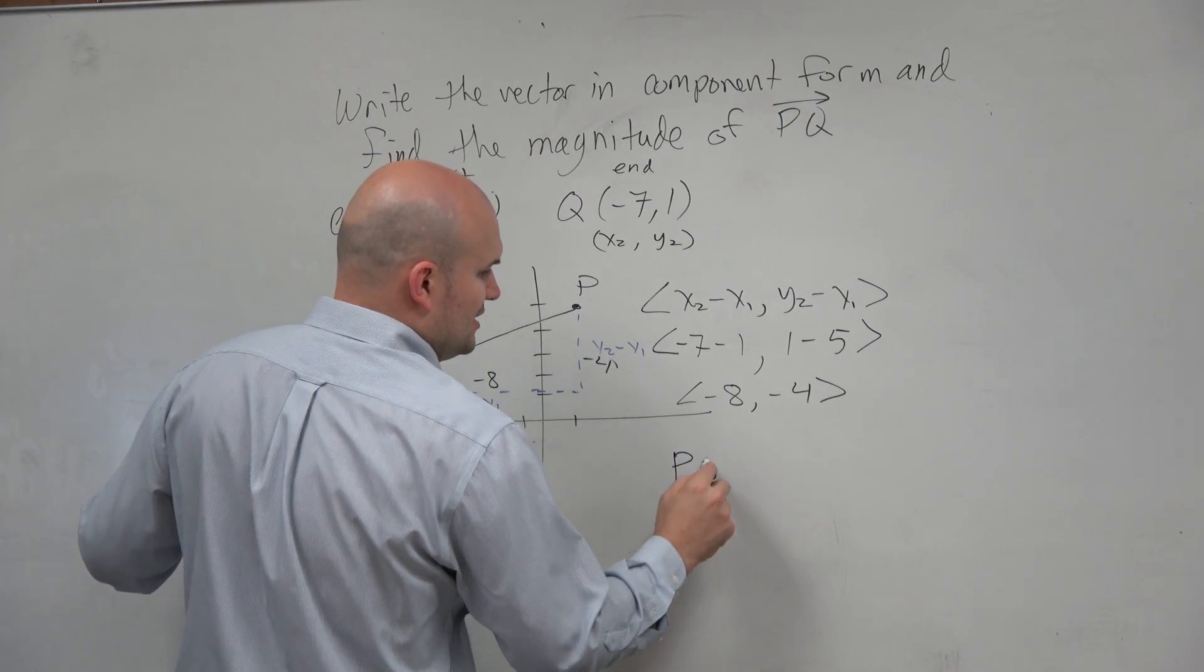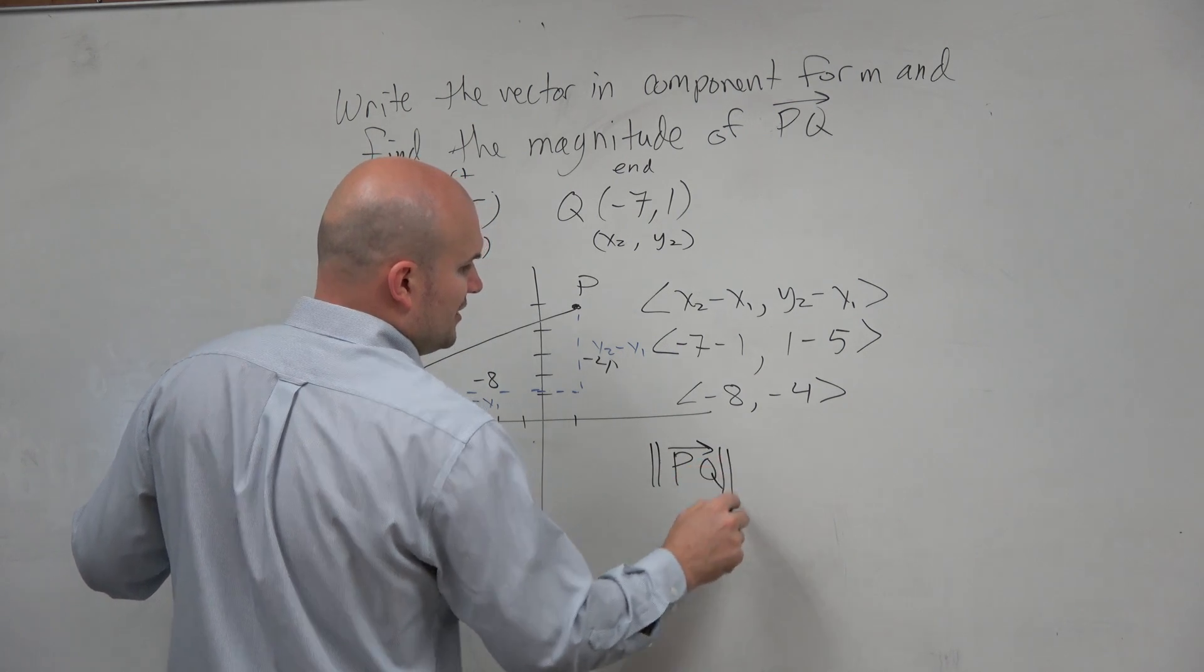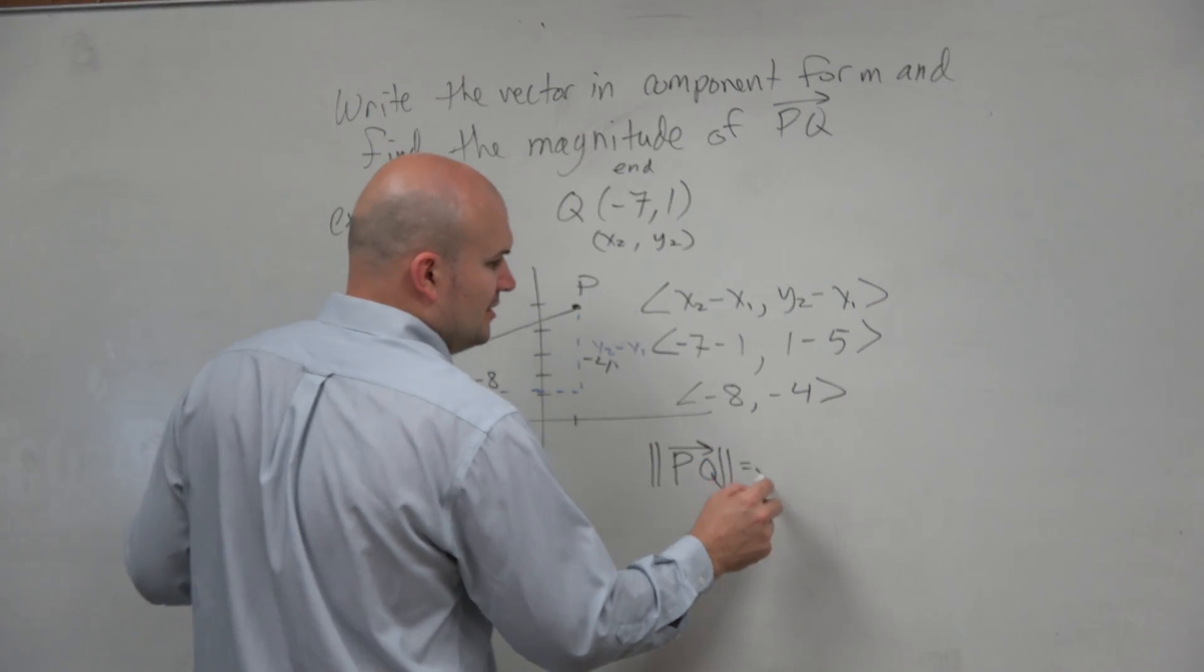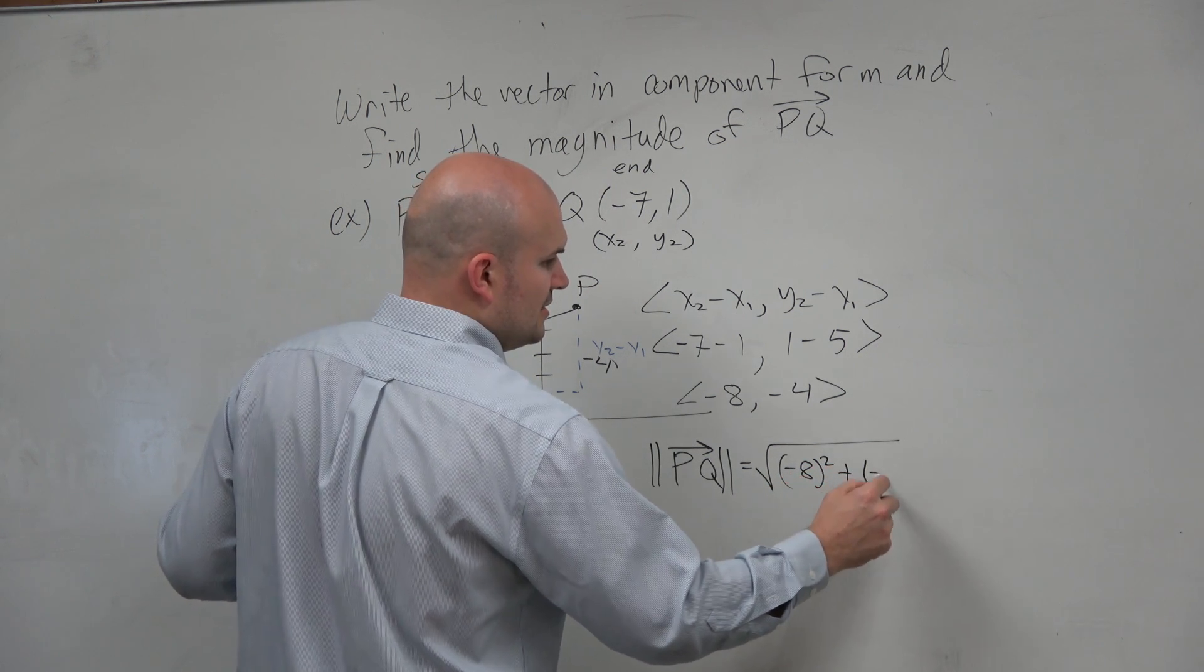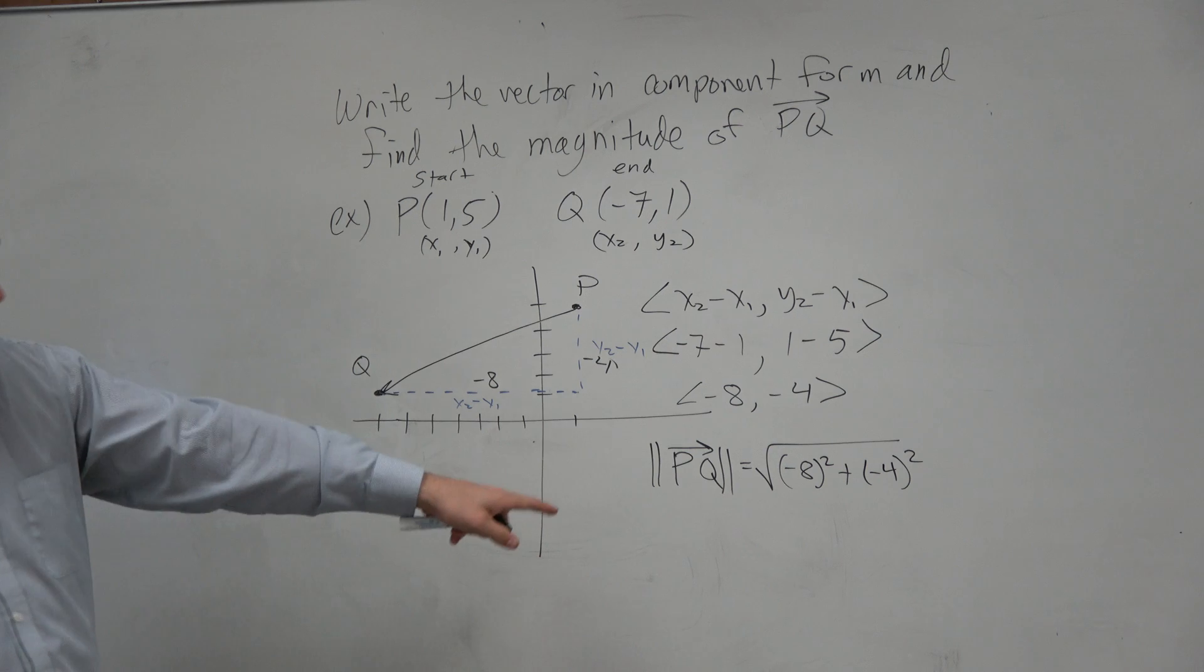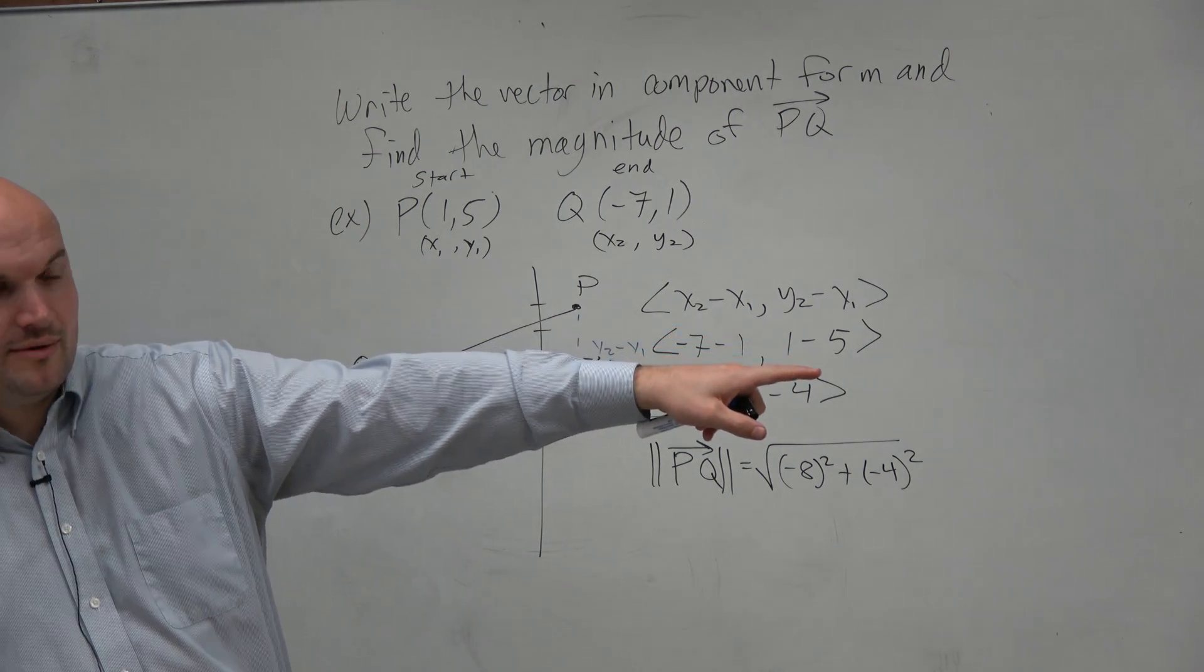So I can say PQ, the magnitude of PQ, is simply the square root of (-8)² plus (-4)². And that's basically the formula that we have over there.